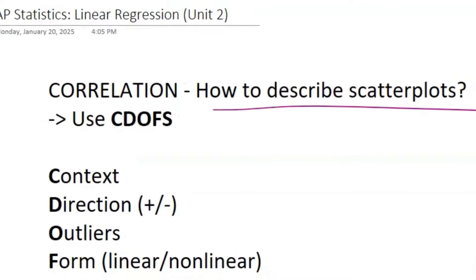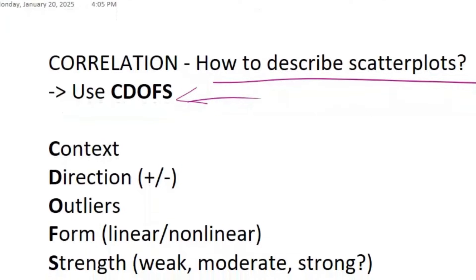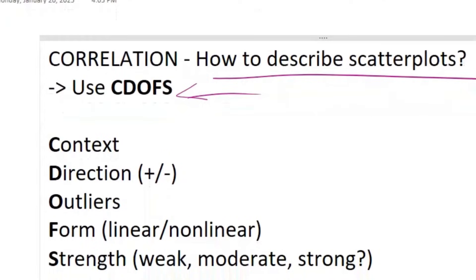So correlation - how exactly do you describe scatterplots? You're going to be using the acronym CDOFS. Put it in context, direction - is it positive or negative? State any outliers. The form - is it linear or nonlinear? And then the strength of that form. Is it strongly linear? Is it weakly linear? All that mumbo jumbo.